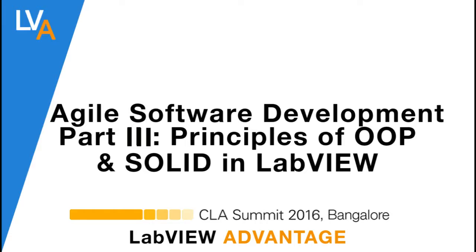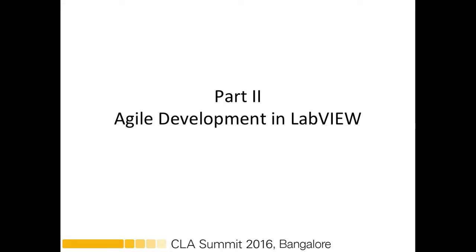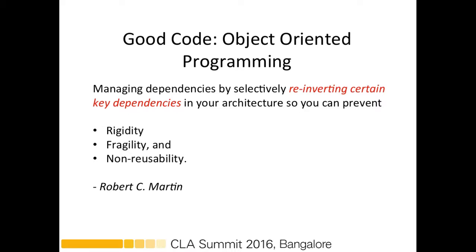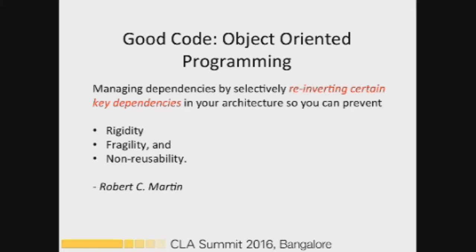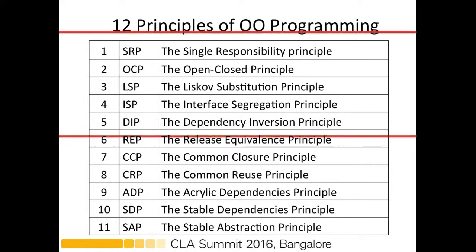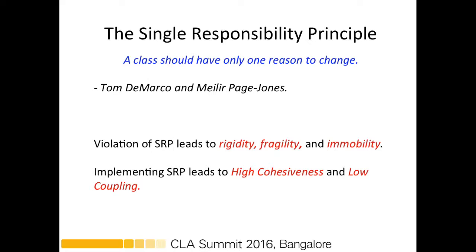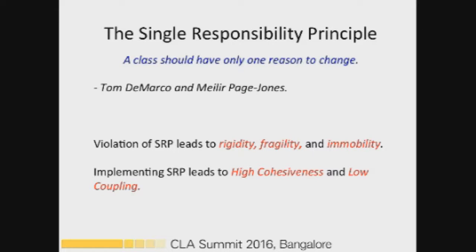Hello, welcome to LabVIEW Advantage. In this video we'll discuss the final part of the Agile Software Development introduction and principles. A good code is about object-oriented programming, and the most important part is managing dependencies by selectively inverting certain key dependencies. In this presentation we'll discuss five of them.